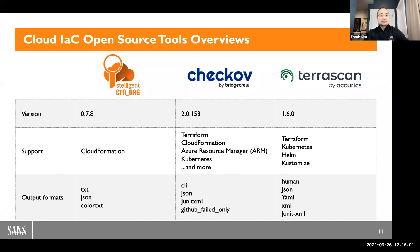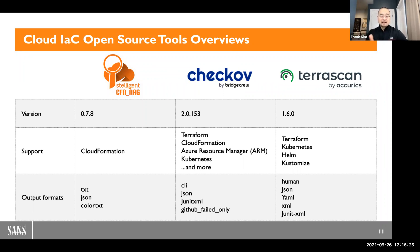The last row covers different output formats, which is extremely important. These output formats help you automatically ingest findings into your other tools of choice in your DevOps toolchain. We'll see an example of how you can integrate this into your Jenkins pipeline.